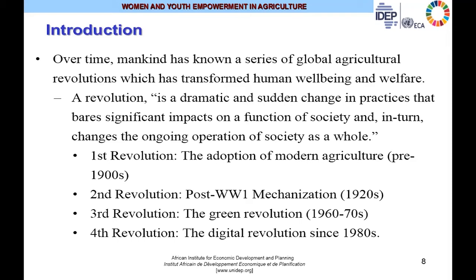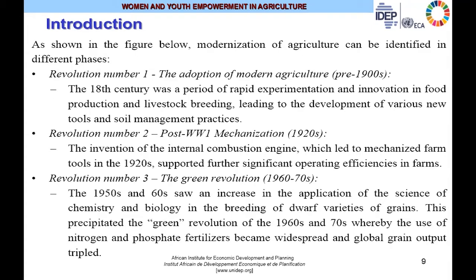An agricultural revolution refers to a dramatic and sudden change in practices that bears significant impacts on the function of society and changes ongoing operations of society as a whole. The first agricultural revolution dates back to the 18th century pre-1900s. The second revolution was post-World War I when mechanization gained pace. The third is the Green Revolution in the 1960s and 1970s. The fourth is the digital revolution that began in the 1980s and is here with us today.